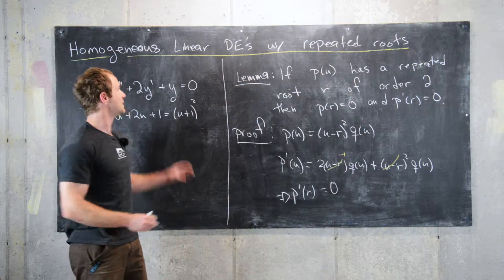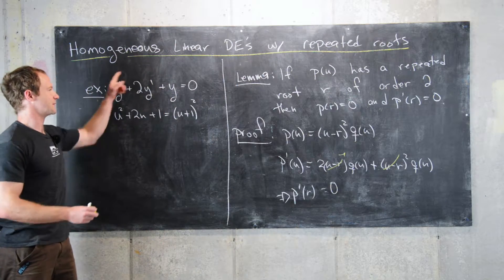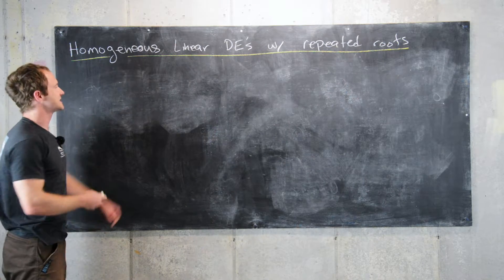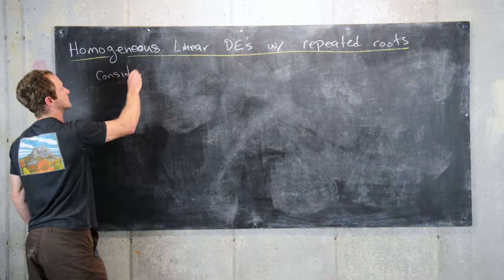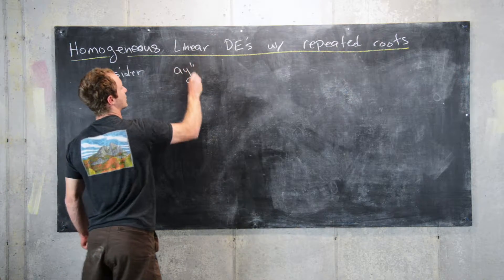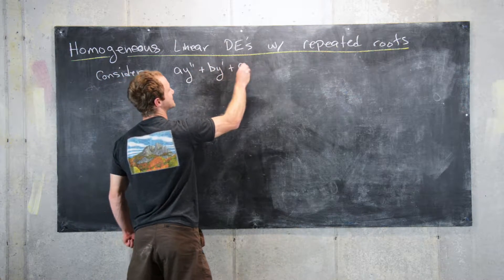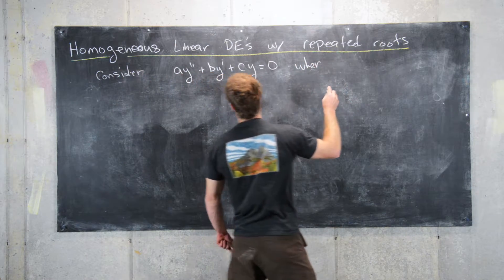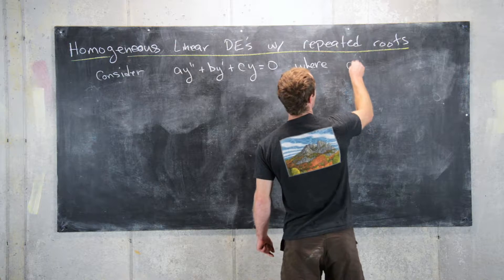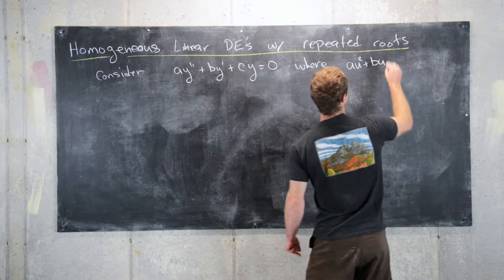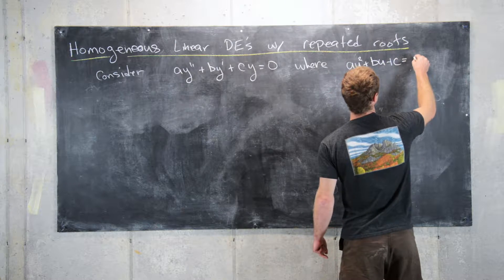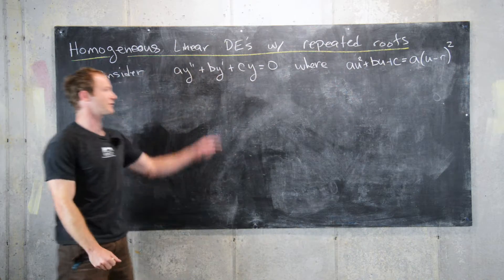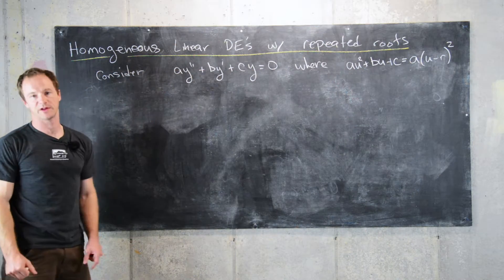So, now that we're equipped with this lemma, we can construct not only a solution to a differential equation like this, but to a general second order differential equation with a repeated root in its polynomial. So, we want to consider a differential equation a·y double prime plus b·y prime plus c·y equals 0, where a·u squared plus b·u plus c factors like a times (u minus r) squared. In other words, there's a repeated root in the companion polynomial.